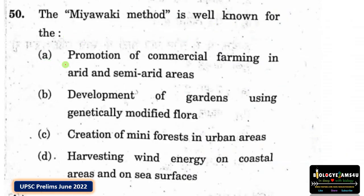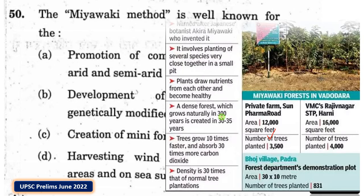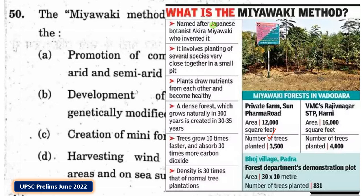The Miyawaki method is well known for the creation of mini forests in urban areas. Named after Japanese botanist Akira Miyawaki, in small plots many species are planted together. They draw nutrients from each other, allowing them to grow upwards, forming a dense forest within 30 years. This method has been widely used in India for making Miyawaki forests in urban areas.